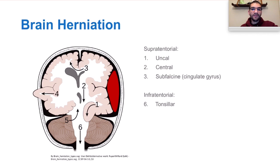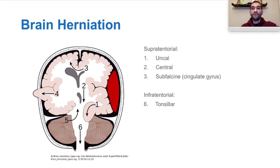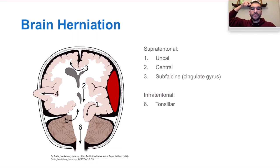Another injury is sub-falcine herniation, or cingulate gyrus herniation, occurring in the middle region right below the cerebral falx. The anterior cerebral arteries run in this region and supply blood to the frontal medial lobes — where the motor cells providing function to the legs exist. In this situation, you get weakness of the legs but essentially normal function of the upper extremities. The homunculus demonstrates that the motor cortex provides function to the legs in the medial region, and injury there affects the lower extremities.